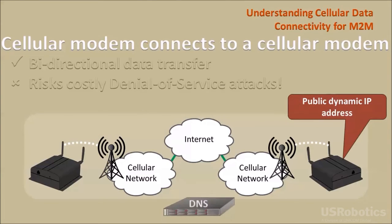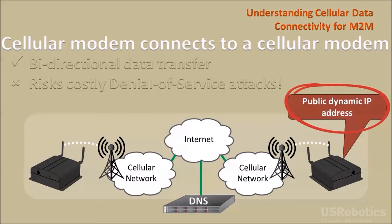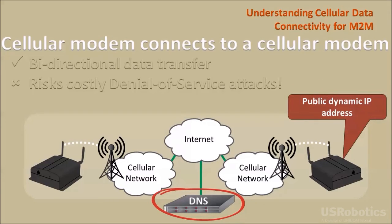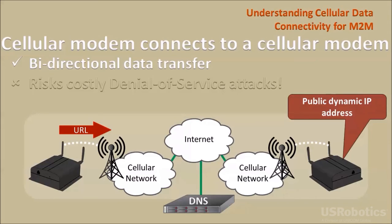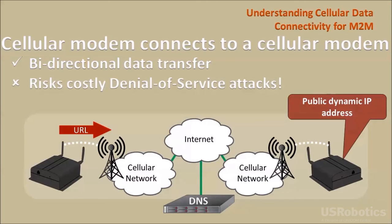Here is a solution that does not use a public static IP address. The destination modem is provisioned with a public dynamic IP address and is configured to use a public DNS to define a fixed URL for the destination modem. Once the originating cellular modem makes a connection to the URL, data can transfer across the connection in either direction. While this approach doesn't have the drawback of a static IP address, it still uses a public IP address on the internet that is vulnerable to denial of service attacks.